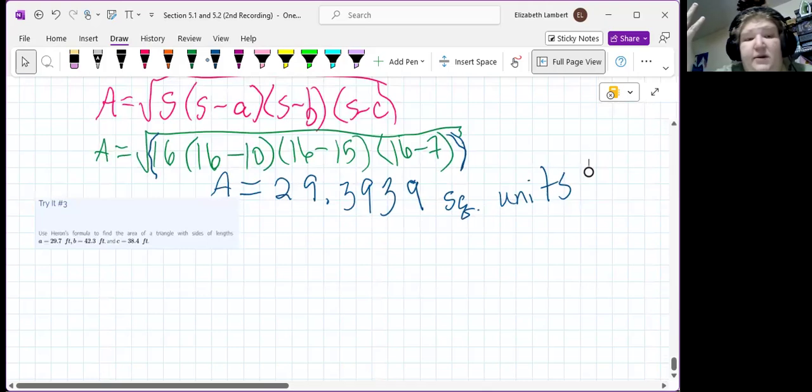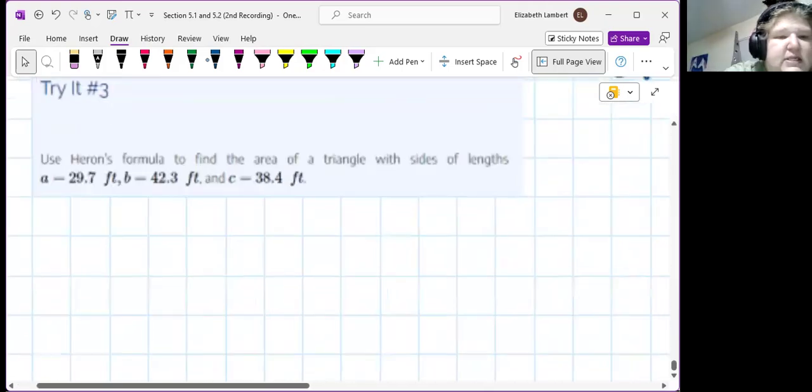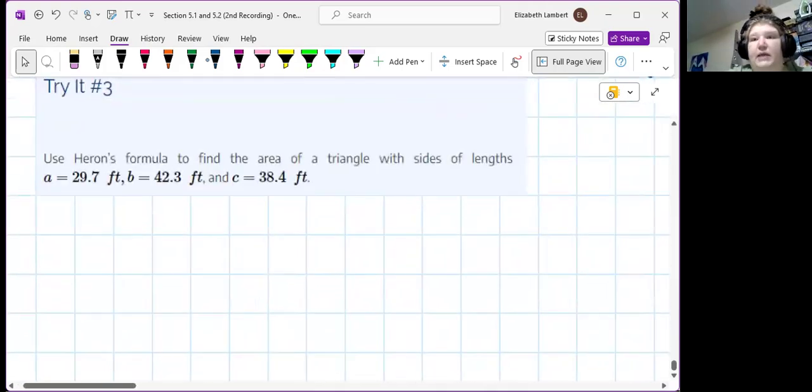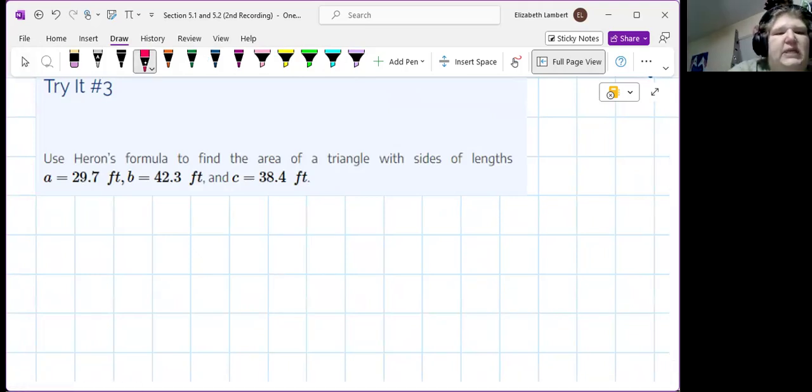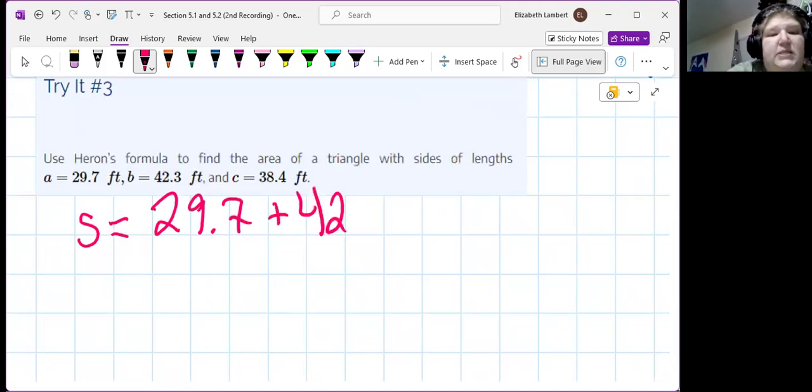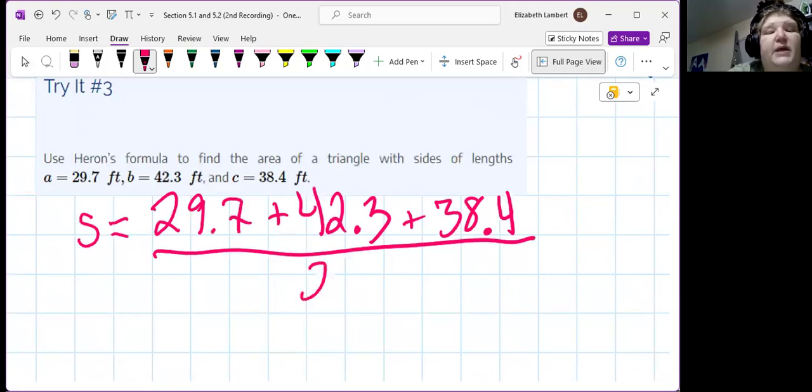Now, we do it again, except there are measurements in feet. I know some of those looked like minus signs when it was zoomed out, but they're not. So, now, our S is going to be a little bit uglier. So, now it's 29.7 plus 42.3 plus 38.4, all divided by 2.